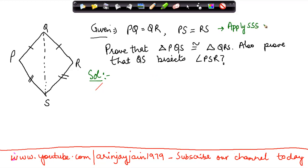Apply SSS criterion. Now in a triangle we know that triangle PQS will be congruent to triangle QRS if all the three sides of PQS are equal to triangle QRS. So let's see, we are given that PQ is equal to QR, so one side is equal. Then we are given that PS is equal to RS, the second side is equal.